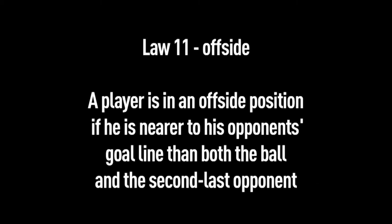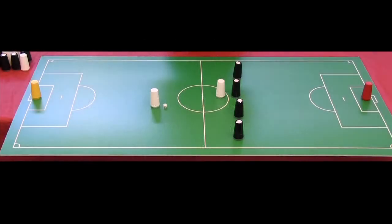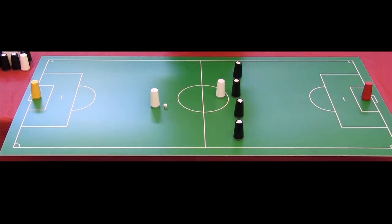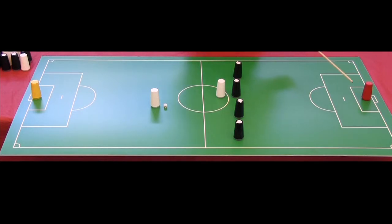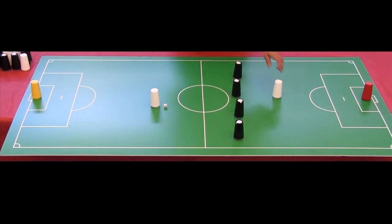Law 11 of soccer's Laws of the Game states that a player is in an offside position if they are nearer to their opponent's goal line than both the ball and the second-to-last opponent at the moment the ball is played. Simply put, there must be at least two opponents between the attacker and the goal at the moment the ball is played. Typically one of those two players is the goalkeeper, so we'll talk about the goalkeeper and the deepest defender.